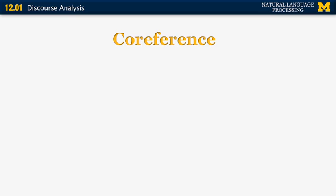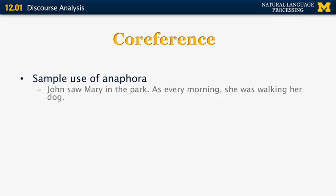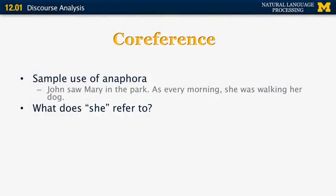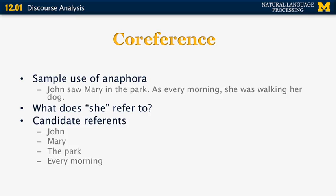Let's look at some other phenomena related to discourse. One of them is coreference. For example, if I say, 'John saw Mary in the park. As every morning, she was walking the dog.' What does 'she' refer to? We have to figure out, of all the words in those two sentences, what it can possibly refer to. We know it has to refer to a noun phrase — the noun phrases are John, Mary, park, every morning, and her dog. How do we know which one is the correct antecedent for 'she'?